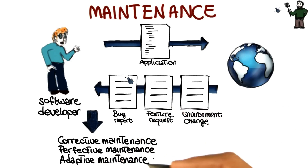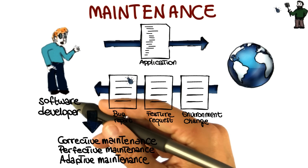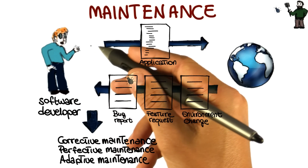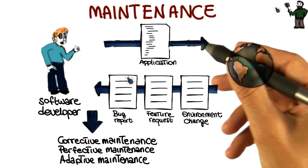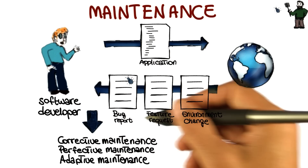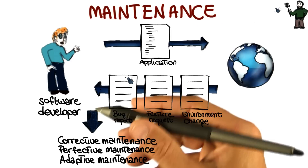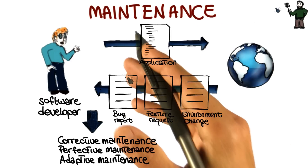After these activities have been performed, the software developer will produce a new version of the application, will release it, and the cycle will continue throughout the lifetime of the software. That's why maintenance is a fundamental activity, and a very expensive one.